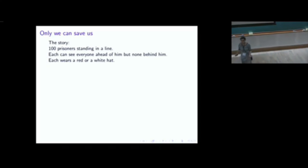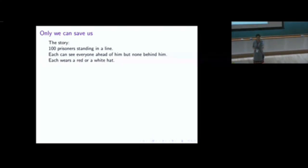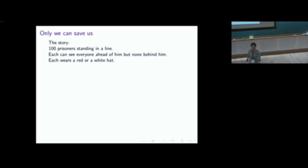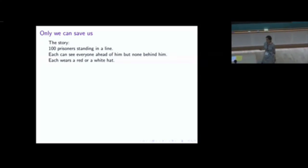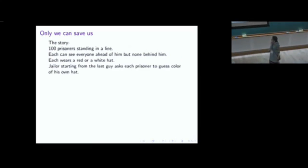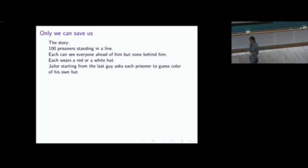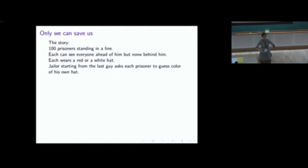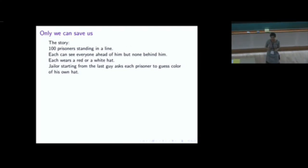The second puzzle is also about hats. There are 100 prisoners standing in a line, not facing each other — everybody can see the hats of everyone ahead of them. Each wears either a red or white hat. A jailer will ask each person the colour of their own hat, starting from the last. If they guess wrong, the prisoner is killed.